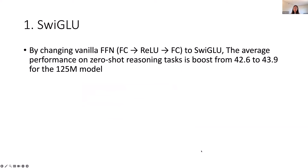First, following the LLaMA paper, we use SwiGLU in the feed-forward network, replacing the vanilla FC structure used in OPT models. With this change, the performance of a 125 million parameter model is boosted by 1.3 points on the commonsense reasoning task.